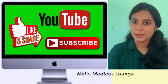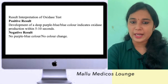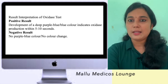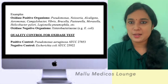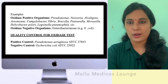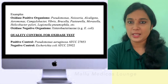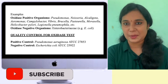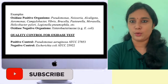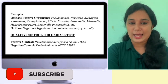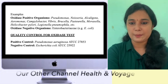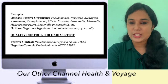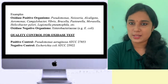A positive result is the development of a deep purple-blue color within 5 to 10 seconds. A negative result shows no purple-blue color within 60 seconds. Examples of oxidase-positive organisms include Pseudomonas, Neisseria, Alcaligenes, Aeromonas, Campylobacter, Vibrio, Brucella, Pasteurella, Helicobacter pylori, and Legionella pneumophila.